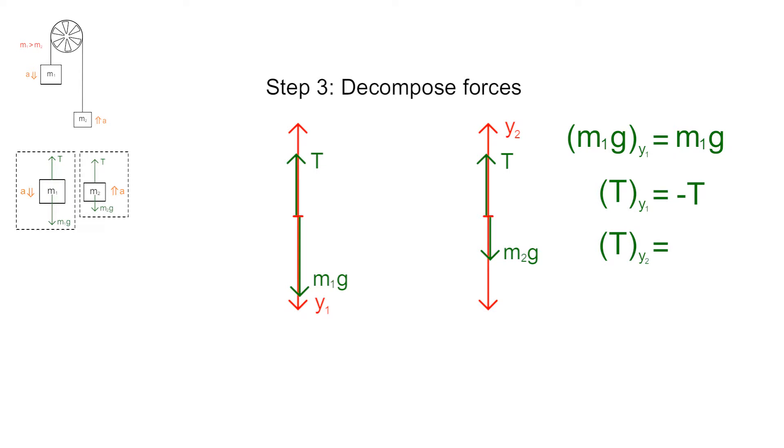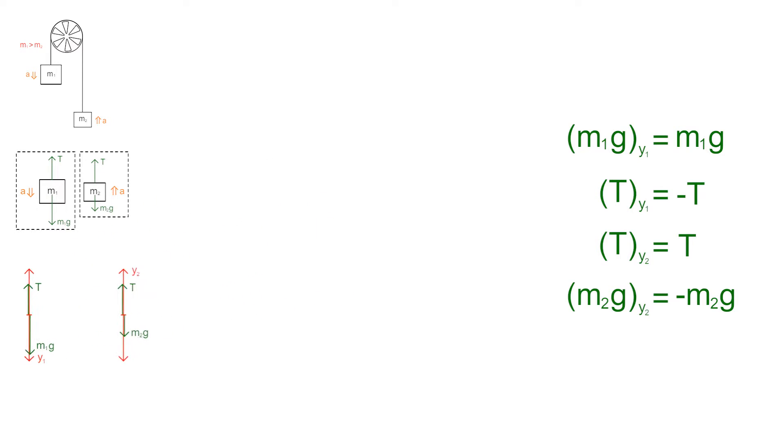Meanwhile, the Y2 component of the tension force is T, and the Y2 component of M2's gravitational force is negative M2g. As with the Y1 component of the tension force, M2's gravitational force is negative because it points in the negative Y2 direction.